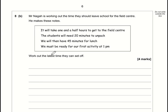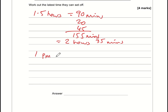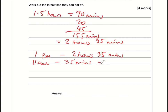Part b: it takes one and a half hours (90 minutes) to get to the field centre, plus 20 minutes to unpack and 45 minutes for lunch — a total of 155 minutes, which is 2 hours 35 minutes. To be ready for 1pm, subtract 2 hours 35 minutes: 1pm minus 2 hours is 11am, minus 35 minutes is 10:25am. The answer is 10:25am.